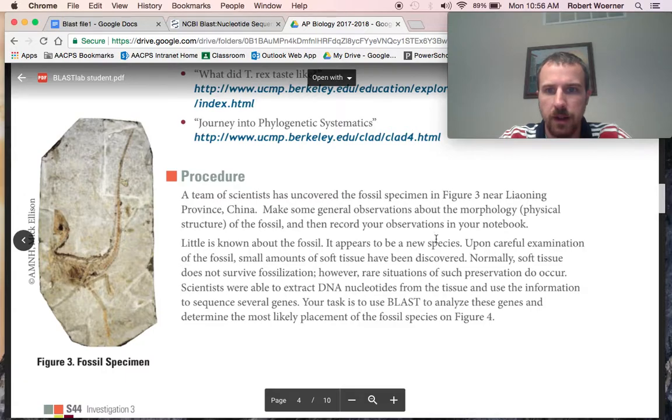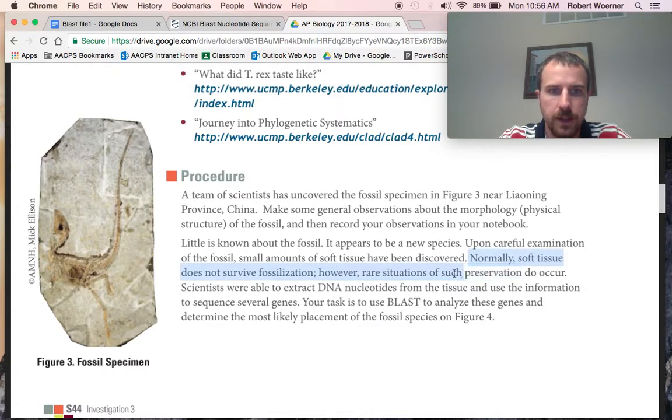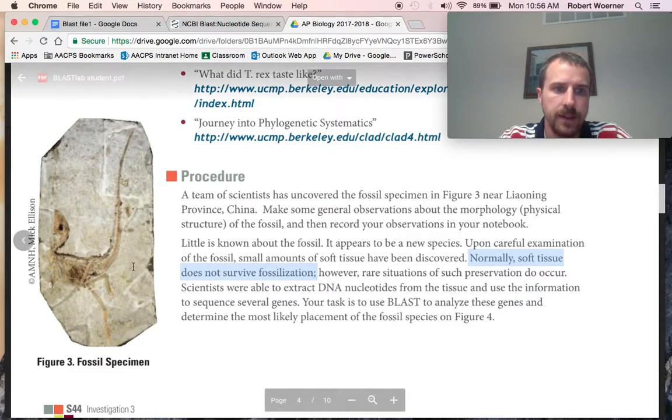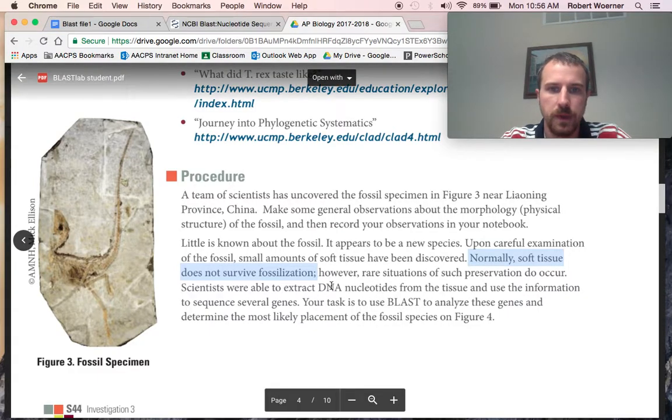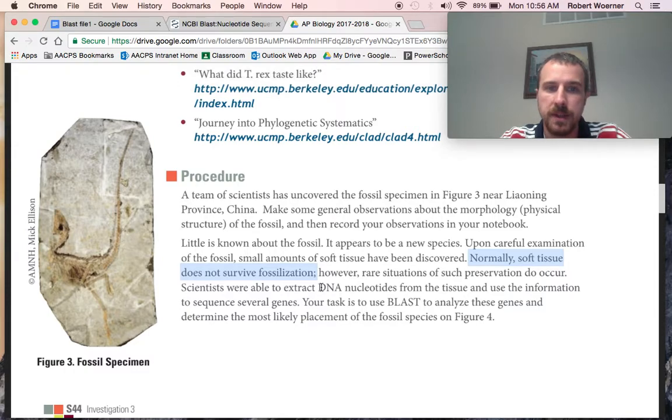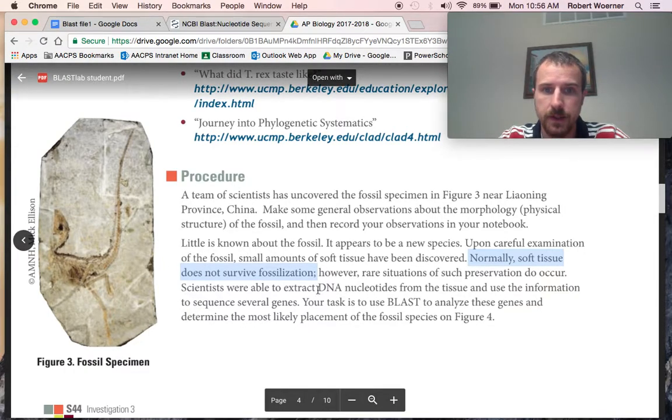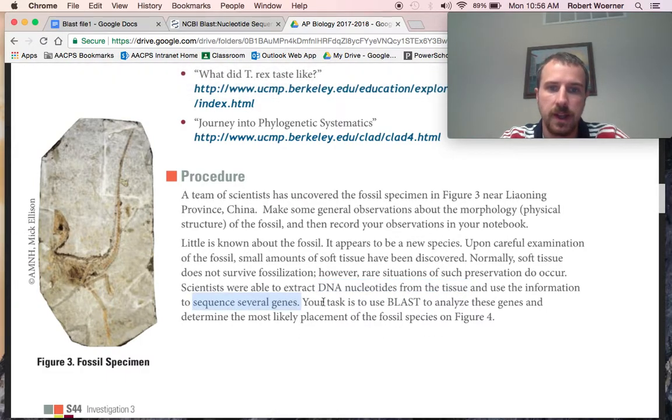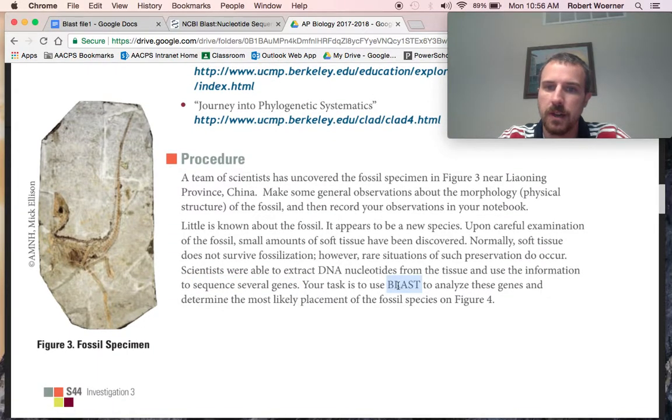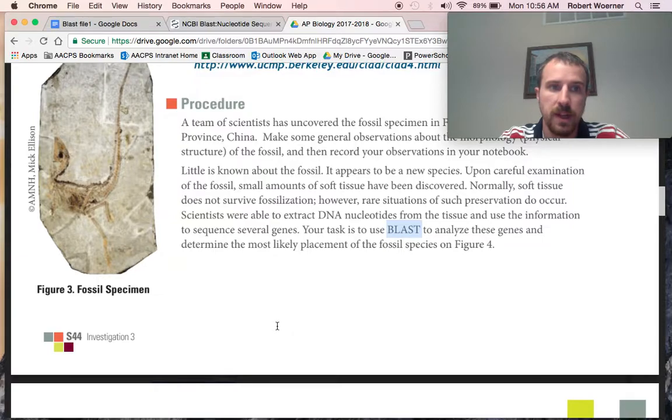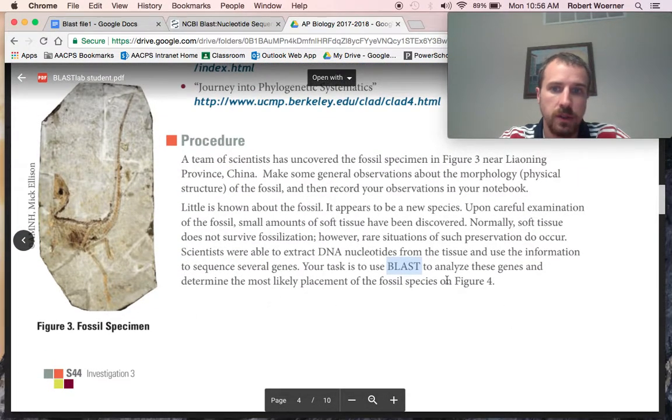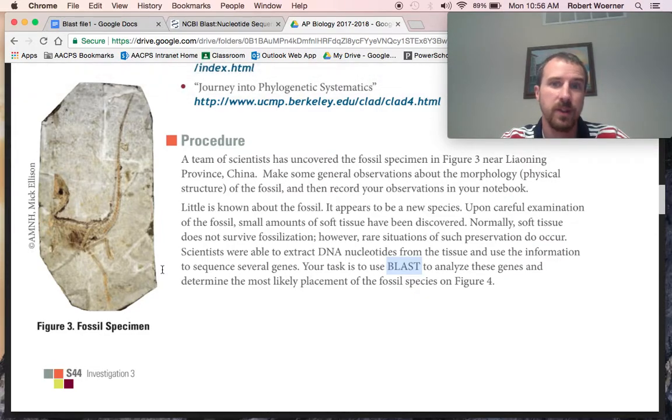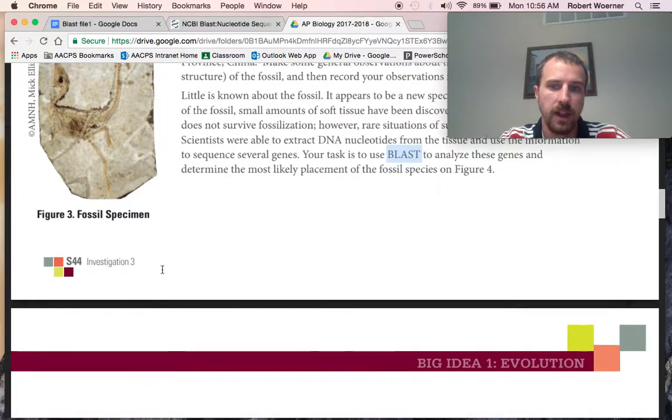What it says in this paragraph is that, normally we don't find soft tissue with fossilization. It decays. We have to look somewhere else for DNA. However, sometimes we can find DNA in the bones. So, we were able to extract some DNA from tissue and use that information to sequence genes. We're going to use BLAST to analyze these genes and make a determination where we would put this fossil. So, we have some DNA. We don't have the entire genome of this creature, but we have some. And that can help us to determine where it goes in its evolutionary phylogeny.